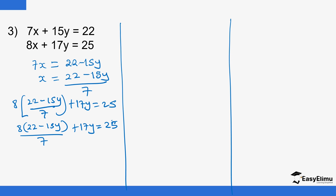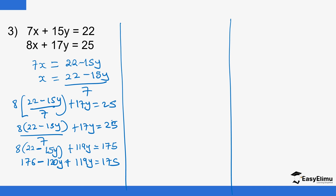Multiply all through by 7. The first term becomes 8 into (22 minus 15y), the second term 17y times 7 is 119y, and 25 times 7 is 175. Opening the bracket: 8 times 22 is 176, and 8 times 15y is 120y. So we have 176 minus 120y plus 119y equals 175. Taking 176 to the other side: minus 120y plus 119y equals 175 minus 176.